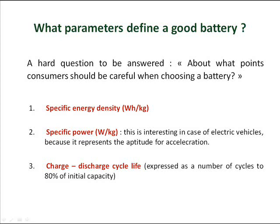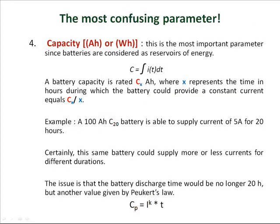Third: charge-discharge cycle life, expressed as a number of cycles to 80% of initial capacity. Then the most confusing parameter is capacity, expressed in ampere-hour or watt-hour. This is the most important parameter since batteries are considered as reservoirs of energy. The capacity is given by the equation C equal to I times T integrated.